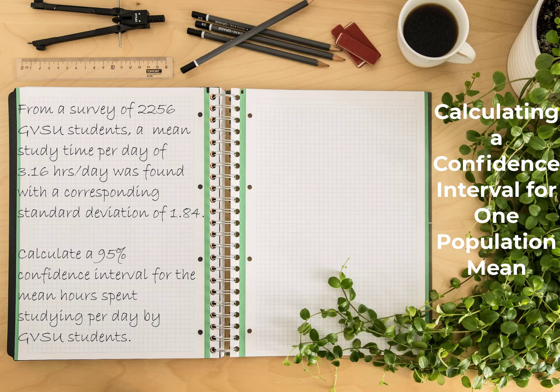We know that from a survey of 2,256 GVSU students that they had a mean study time of 3.16 hours per day with a corresponding standard deviation of 1.84. So we'll calculate a 95% confidence interval for this parameter, which is going to be mean hours spent studying per day by all GVSU students.